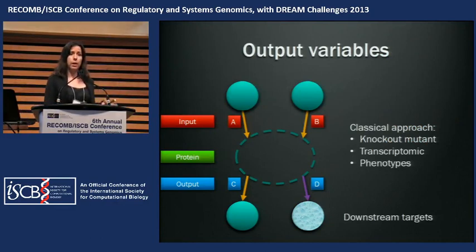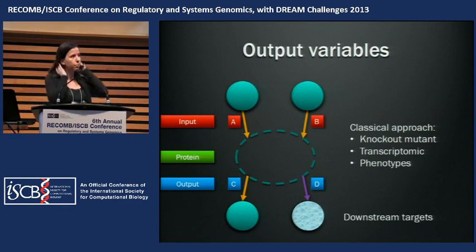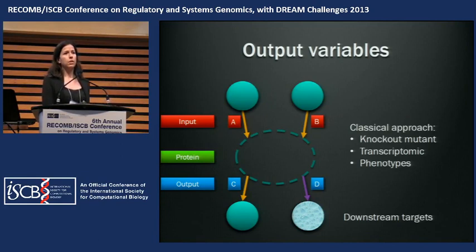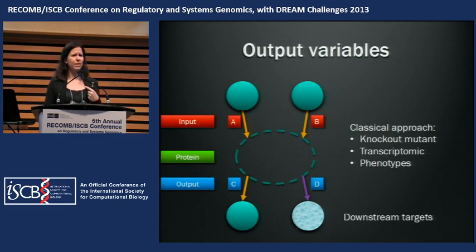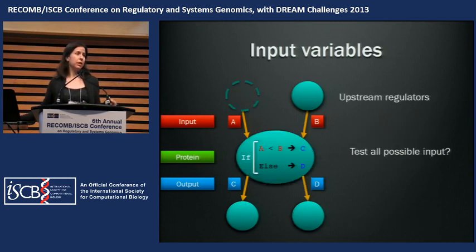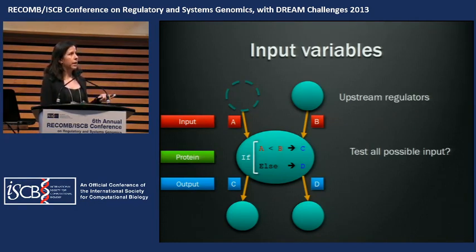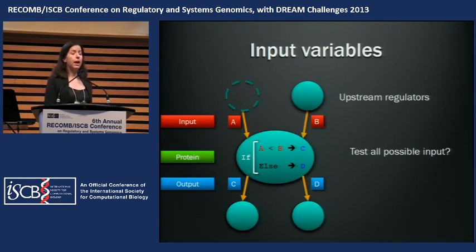So far, we have been quite good at discovering what are the downstream targets of genes and proteins — for example, for kinases. A classical approach involved knocking out genes or proteins, and then looking at what happens at a transcriptomic level or the phenotypic level, like phosphorylation. But if you try to apply this same strategy to identify upstream regulators, then you face a problem: for each gene that you knock out, you have to perform a new experiment, and the experiments pile up very high before you get to find even one upstream regulator.